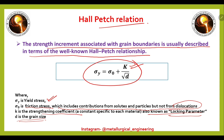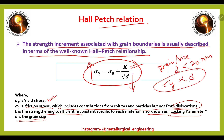In the direct Hall-Petch relation, if we decrease the grain size, the yield strength of the material increases. In contrast, the inverse Hall-Petch relation states that when the grain size D is less than 20 nanometers, the yield strength σy is directly proportional to grain size — meaning if we decrease D, σy will also decrease. This is the inverse Hall-Petch relation.